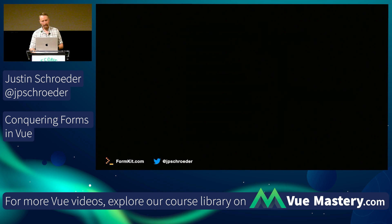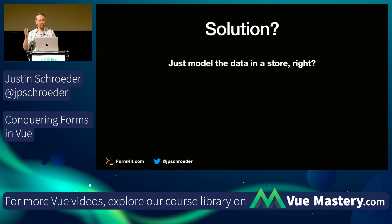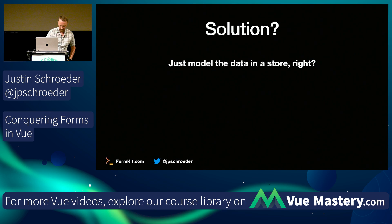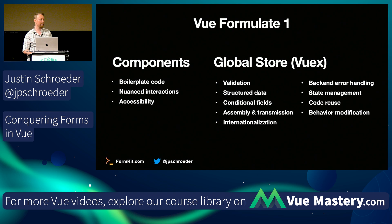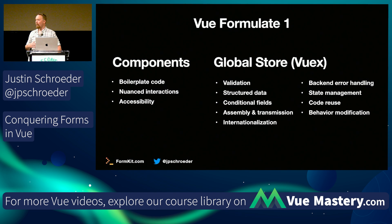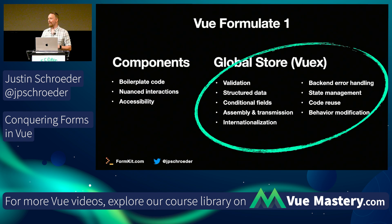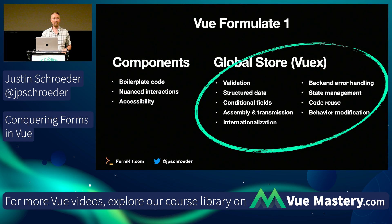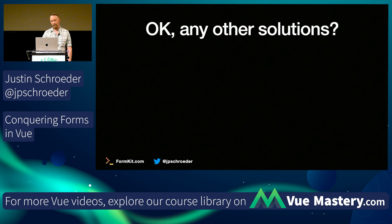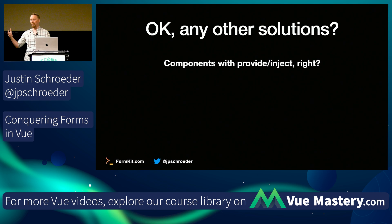So what is all that other stuff that components don't solve? I would say this is a structural problem — these are fundamentally structural issues in our forms. What would a solution be? How about we just model the data in a store? Maybe we'll take the data and instead of trying to shove it into the components, we'll pull it out into a global store — maybe Pinia, or back in the old days, VueX. VueFormulate 1 was around 2018 and we basically said components solve some chunk of this, so let's provide some components and model the rest in VueX.